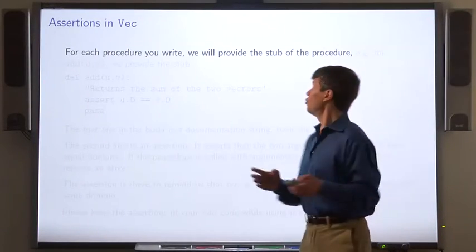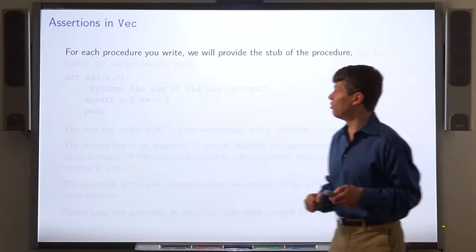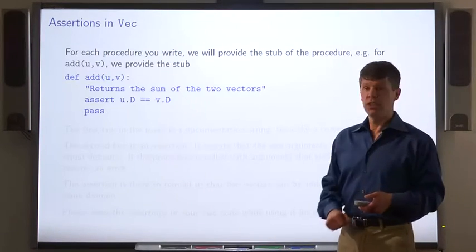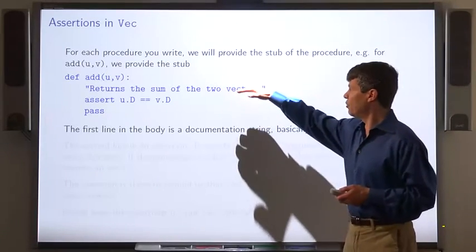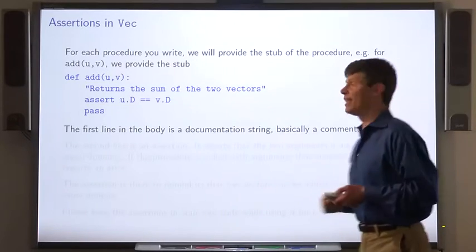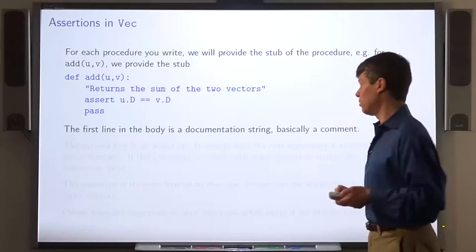For each procedure you write, we'll provide the stub of the procedure. So for example, for add, here's the stub we provide. Now, this first line is a documentation string. It's basically a comment that tells us what the procedure is supposed to do. The second line is an assertion.